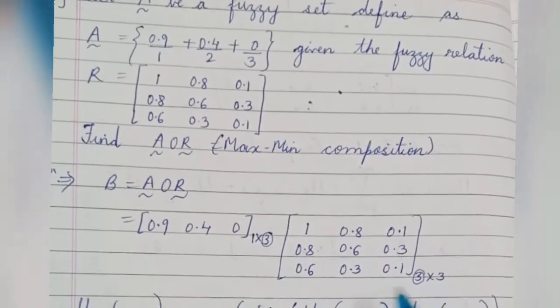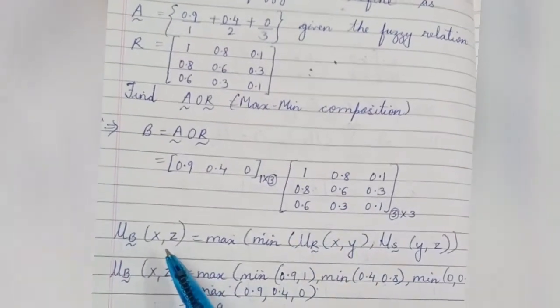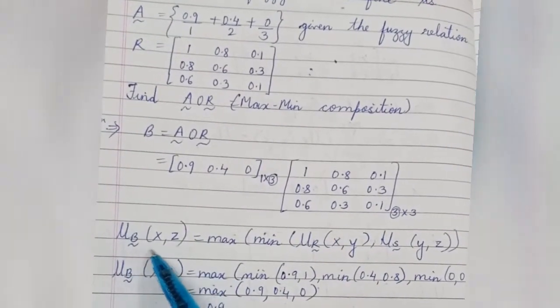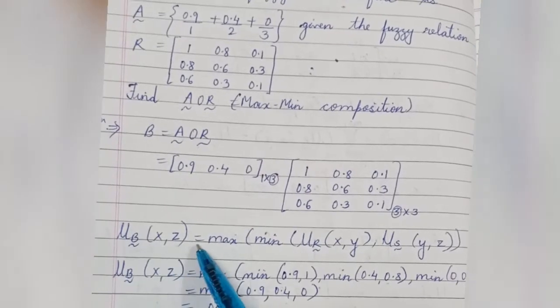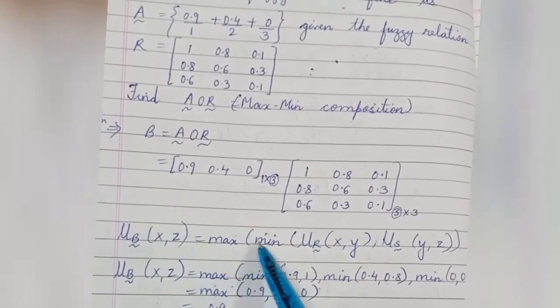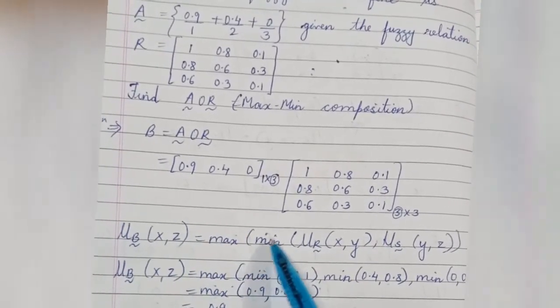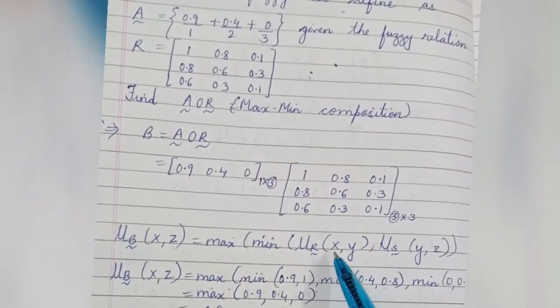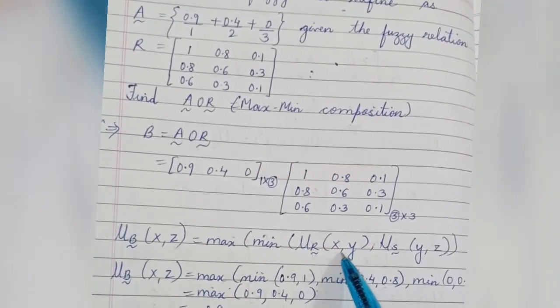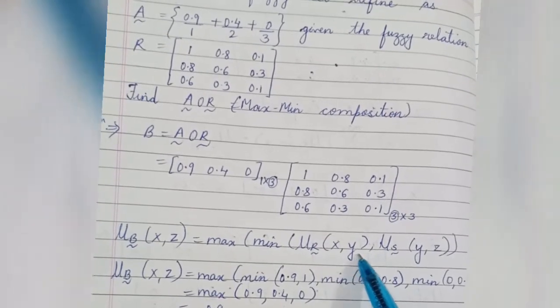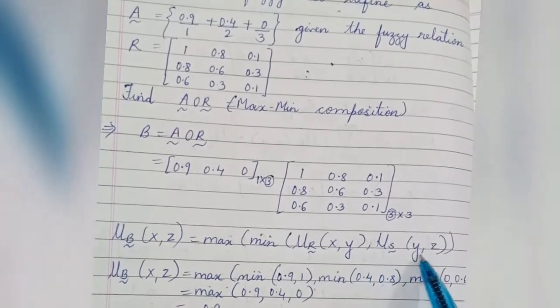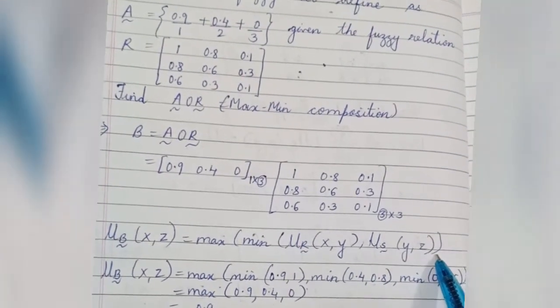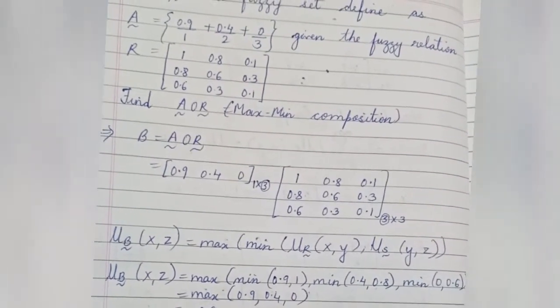Now apply the formula: μ_B(x, z) = max { min( μ_R(x, y), μ_S(y, z) ) } for all y. This is the max-min composition formula we will use to calculate each element of the result matrix.